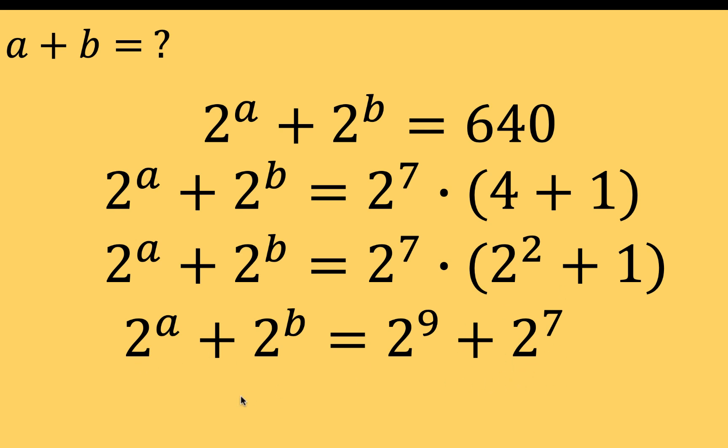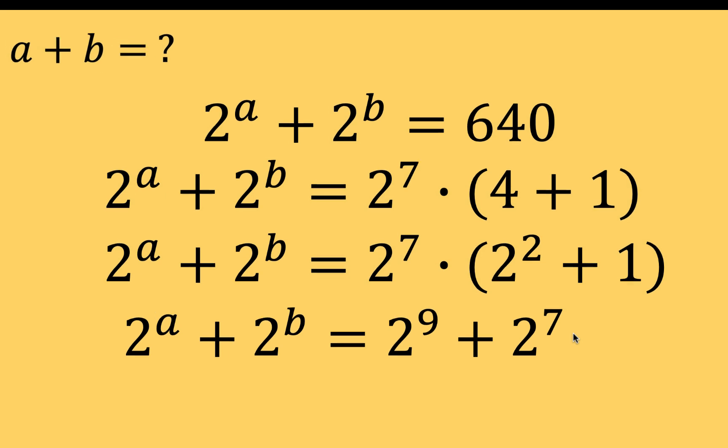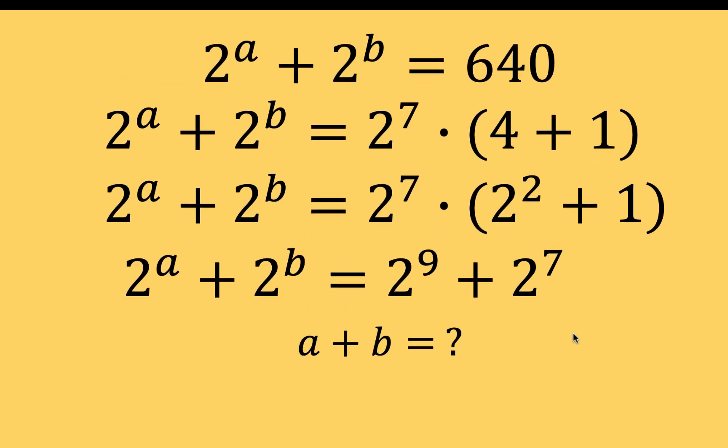Notice now that the form of the left and right sides are similar. You have 2 raised to A on the left and 2 raised to 9 on the right. Plus signs on both sides. 2 raised to B on the left and 2 raised to the seventh on the right. So A plus B would be 9 plus 7, or 16. Our final answer is 16.